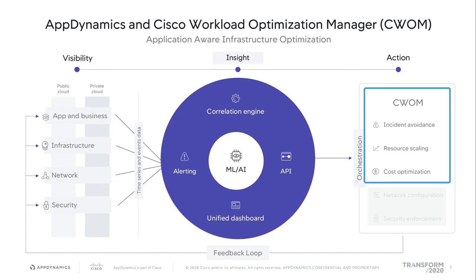The time series and events data from each of these layers of the technology stack is injected into what's known as our cognition engine — our machine learning and AI algorithm — which connects the correlations happening between your time series and events data, alerts any APIs you're using, and provides a unified dashboard to view the insights provided here. This information is then delineated out to our actioning pillar, and I want to focus on the top three elements: incident avoidance, resource scaling, and cost optimization. These are really critical use cases around CWOM.